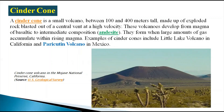The first major type is the cinder cone volcano. A cinder cone is a small volcano between 100 to 400 meters tall, made of exploded rock blasted out of a central vent at high velocity. These volcanoes are small in size with a height of 100 to 400 meters.